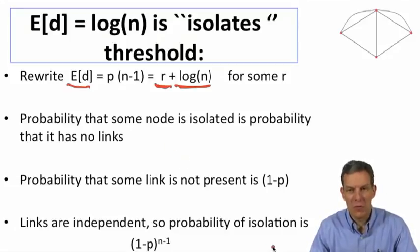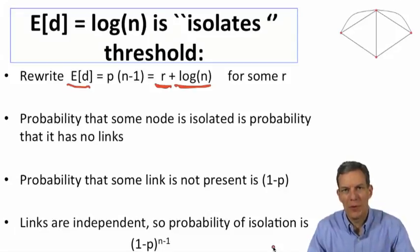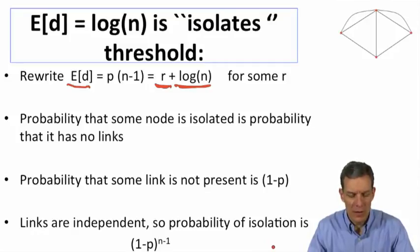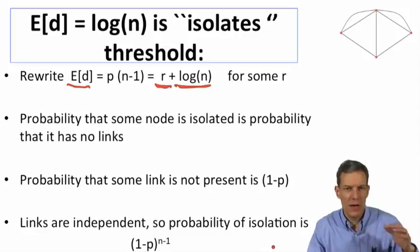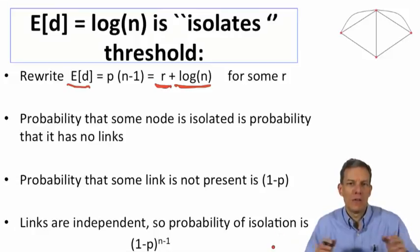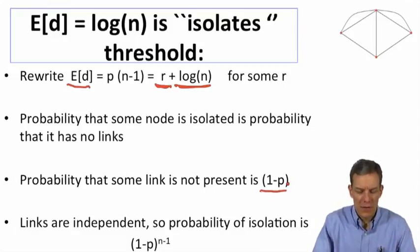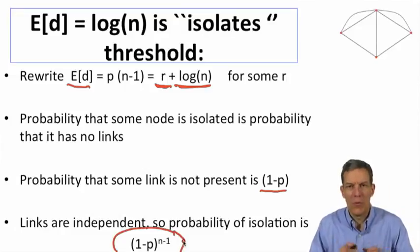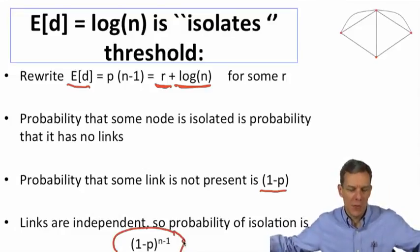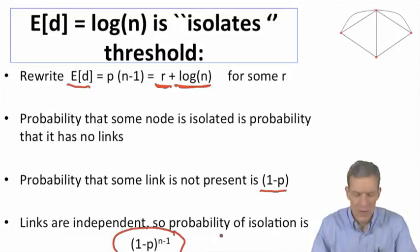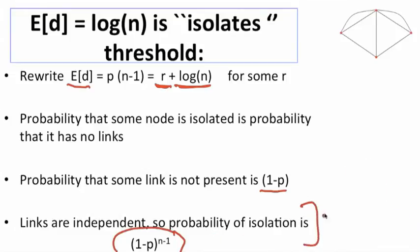Now let's do a calculation of the probability that some node is isolated. How is that going to depend on this expected degree? The probability that some link is not present — I look at a given node and ask, what's the probability that it's isolated? Well, it's the probability that it has no links. The probability that it doesn't have one of its links is 1 minus P. The probability that it has none of its links is (1 - P) raised to the N minus 1 power. So this is the probability that some node is isolated.